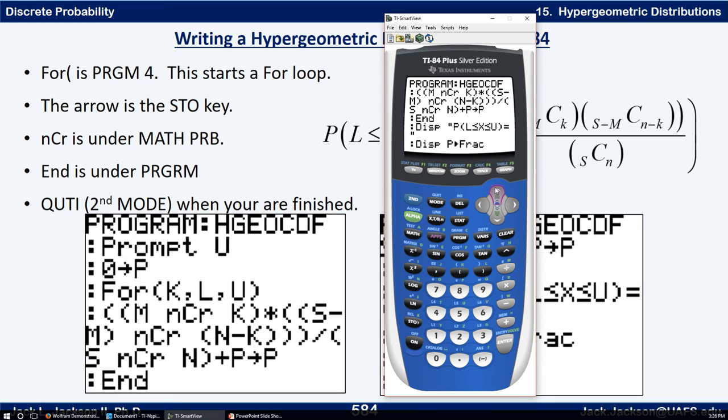We've already talked about display and quotes. Now the less than you can find that under test. So second math gives you all your inequalities and equals and not equals. So we want less than or equal to. So that's test again, less than or equal to, number six. Alpha U. Close parentheses. Equals, again under test, first one. And the quote is alpha plus. That's the quote. And there we go. Display P in the fraction.